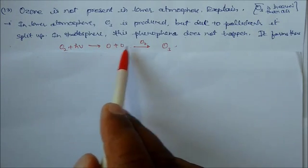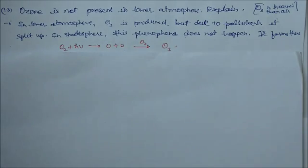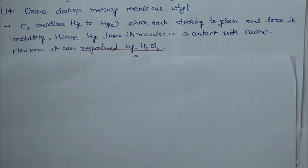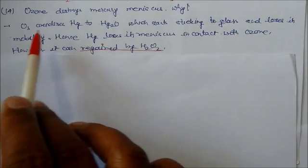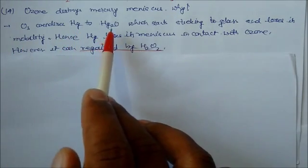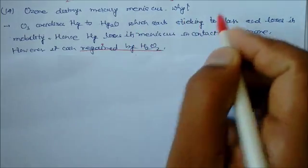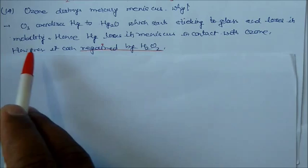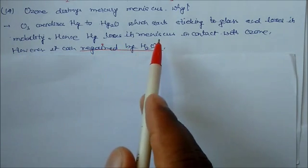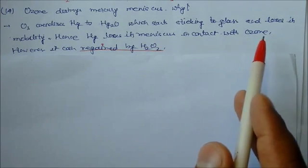Ozone destroys mercury meniscus. Why? Because ozone oxidizes mercury to HgO (mercury oxide), which starts sticking to glass and loses its mobility. Hence, mercury loses its meniscus in contact with ozone. However, it can regain by H2O2.